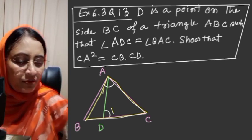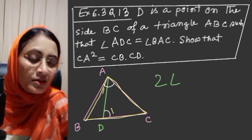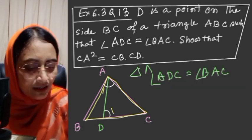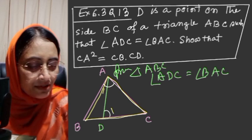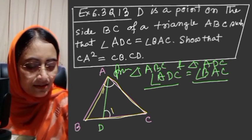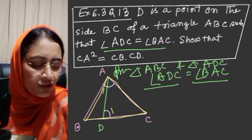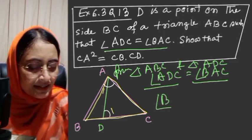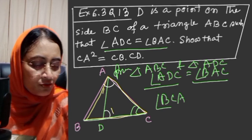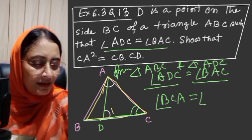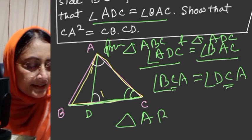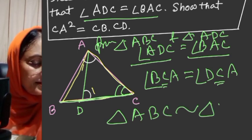It becomes easy for us. With two angles, we get similarity. Two angles equal means the third angle automatically will be equal. Therefore, triangle ABC and triangle ADC: angle ADC is equal to angle BAC. Triangle BCA is similar to triangle ADC.